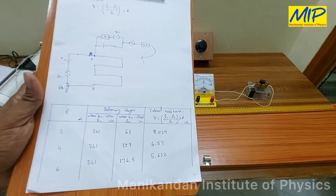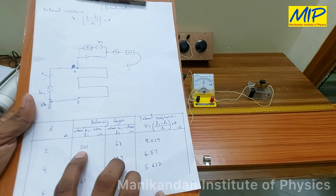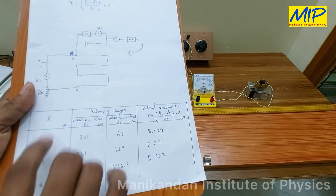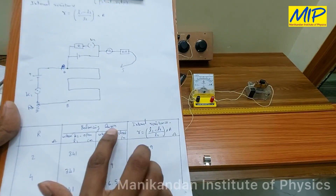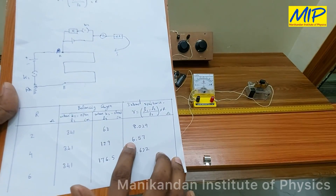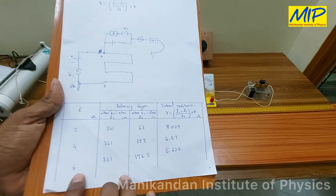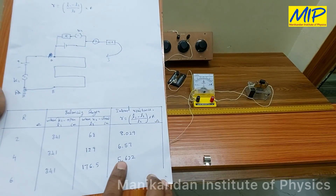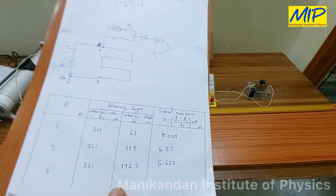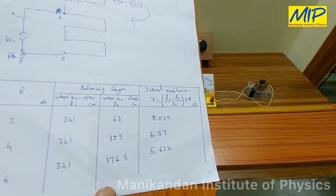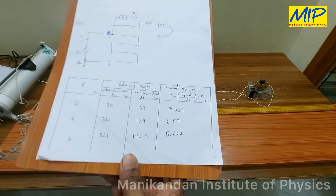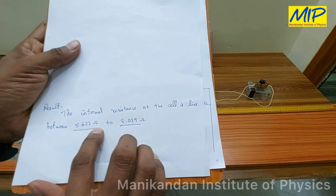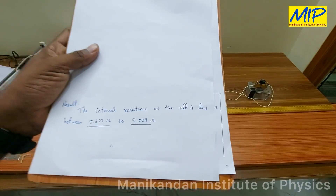Using the R values and l1, l2 values we can find the internal resistance of the cell. For observation 1: R=2Ω, l1=341cm, l2=68cm, internal resistance = 8.029Ω. For observation 2: R=4Ω, l1=341cm, l2=129cm, internal resistance = 6.57Ω. For observation 3: R=6Ω, l1=341cm, l2=176.5cm, internal resistance = 5.622Ω. So the internal resistance of the cell lies between 5.622 ohms and 8.029 ohms.